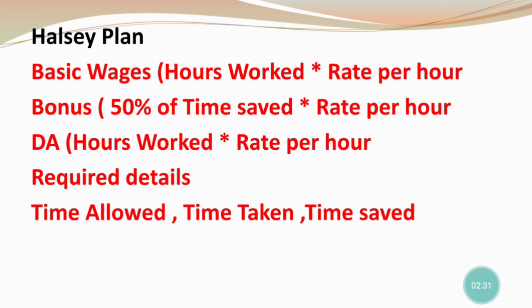Next is the bonus. In the Halsey plan, the bonus is 50% of the time saved multiplied by the rate per hour. So the formula becomes: 50% of time saved × rate per hour. The time saved is added to basic wages, which is hours worked multiplied by rate per hour.